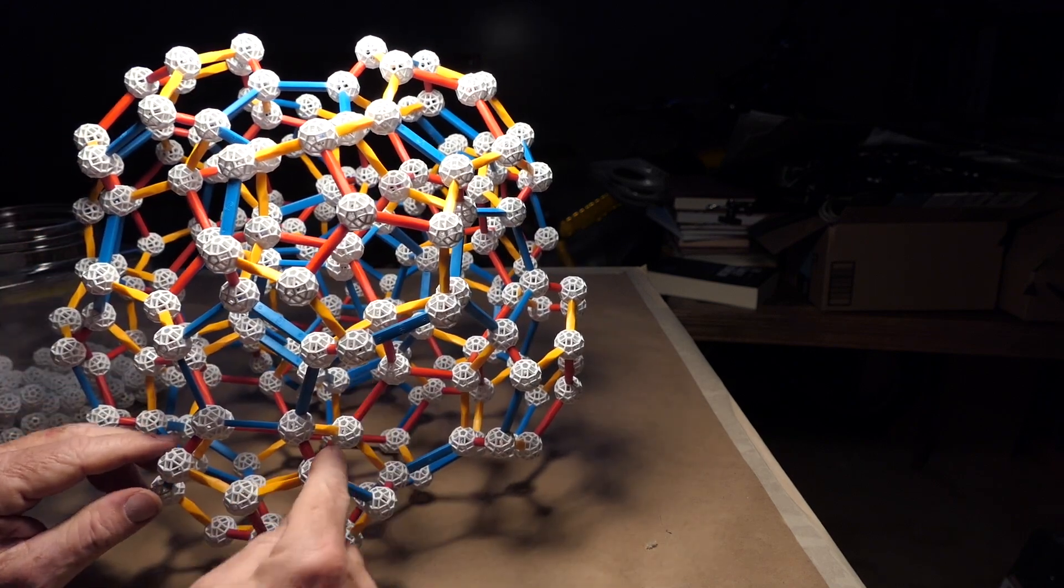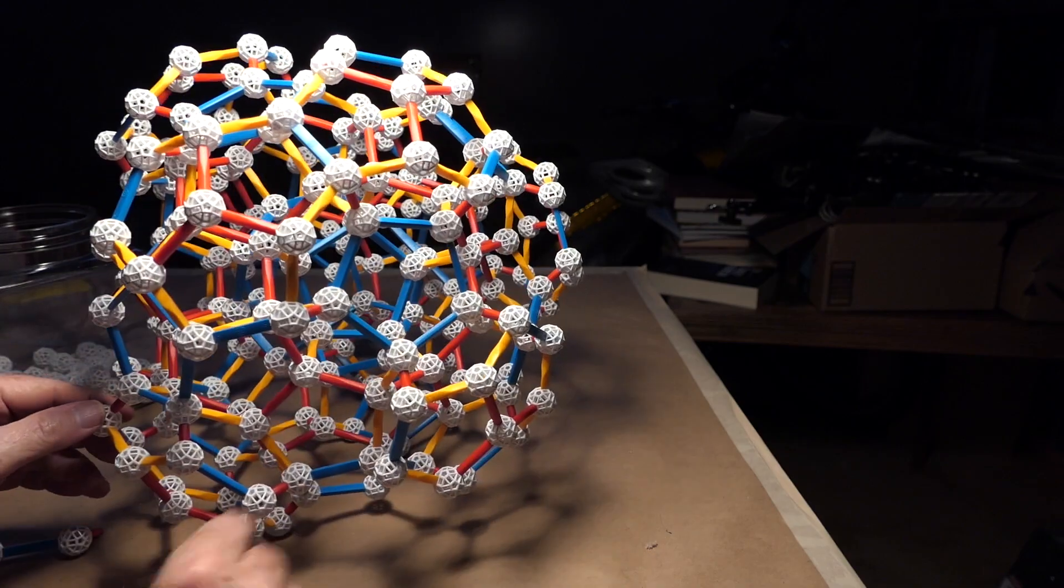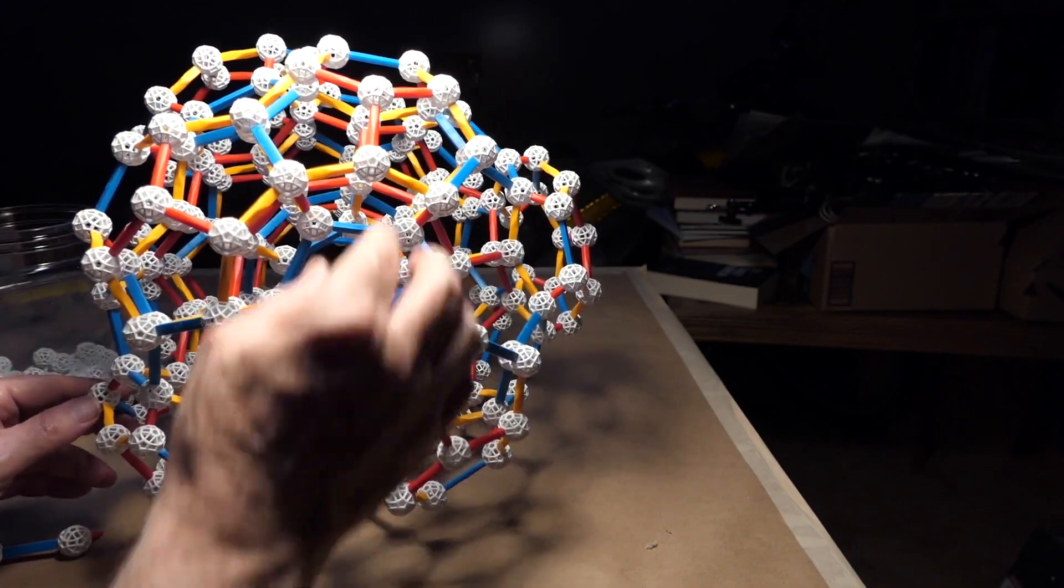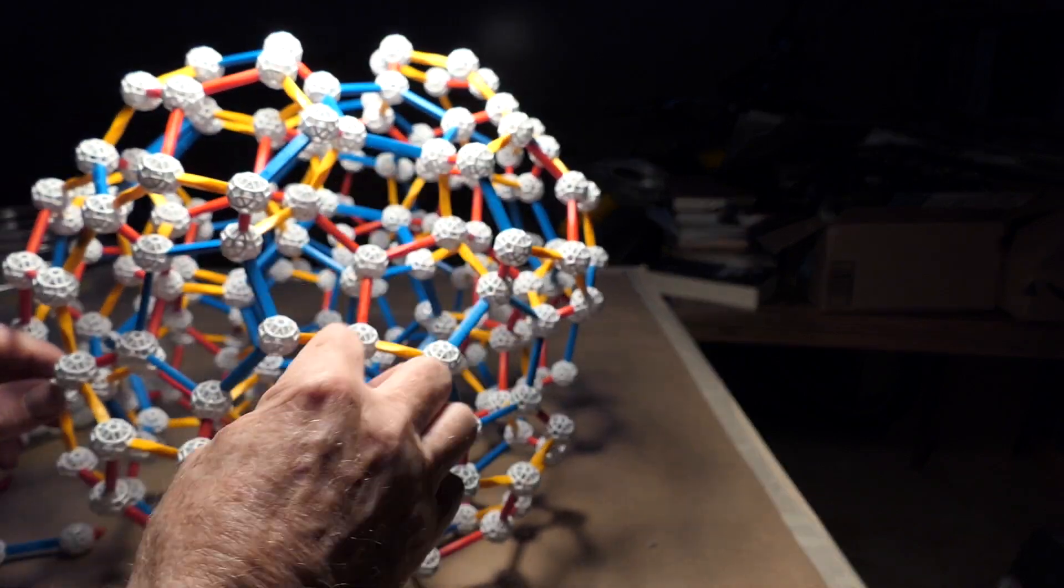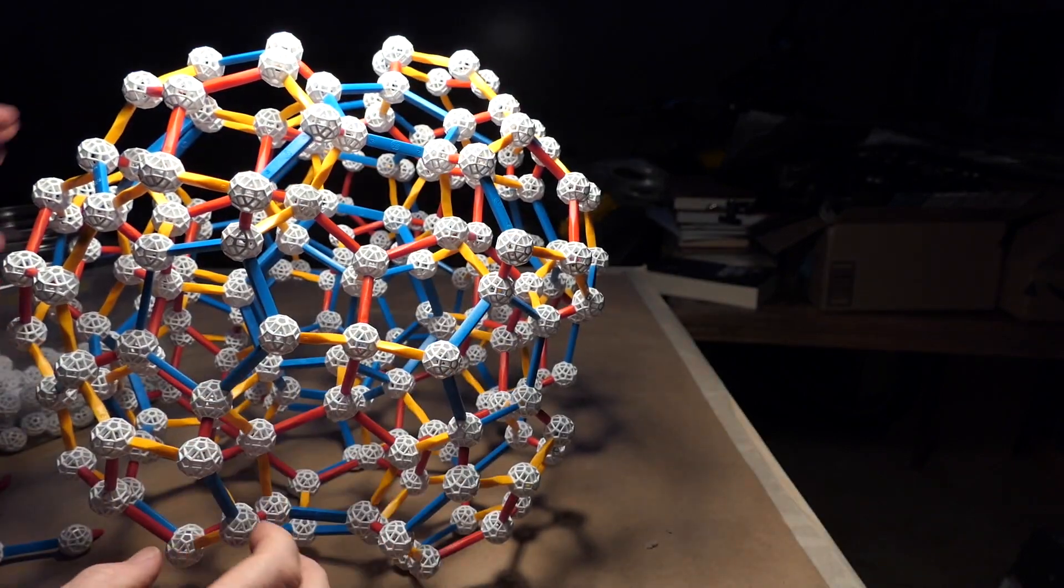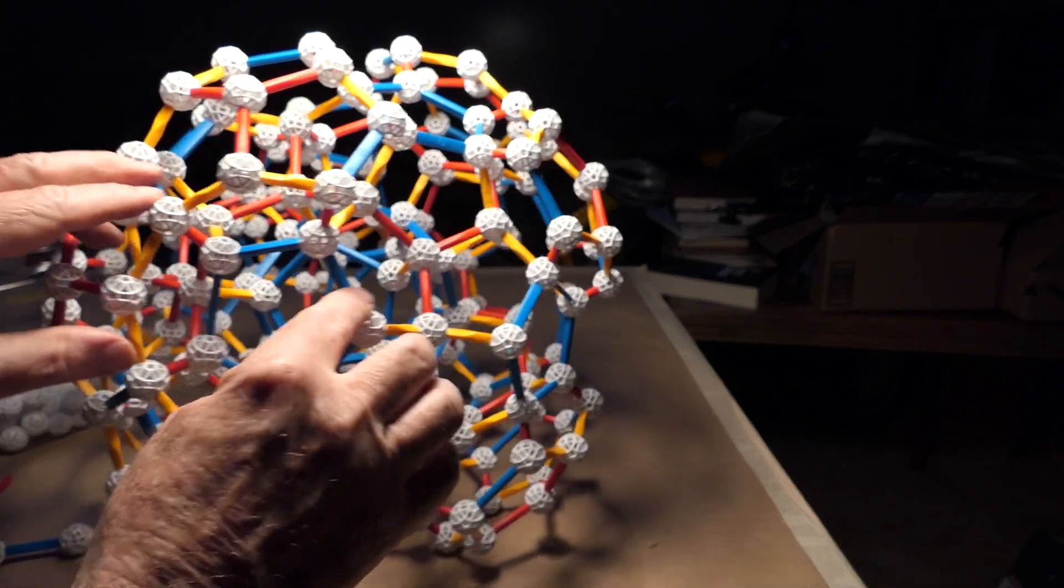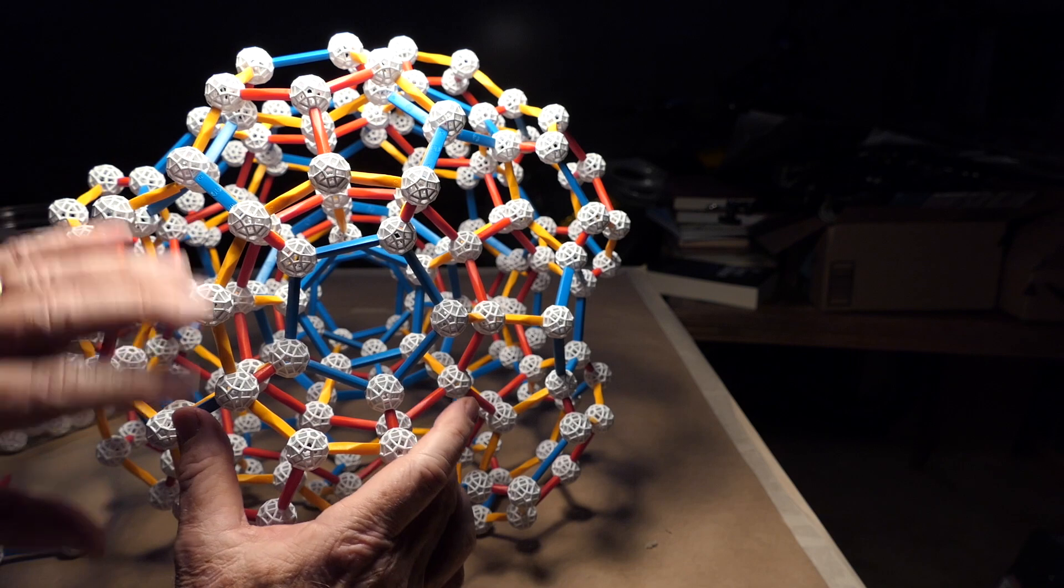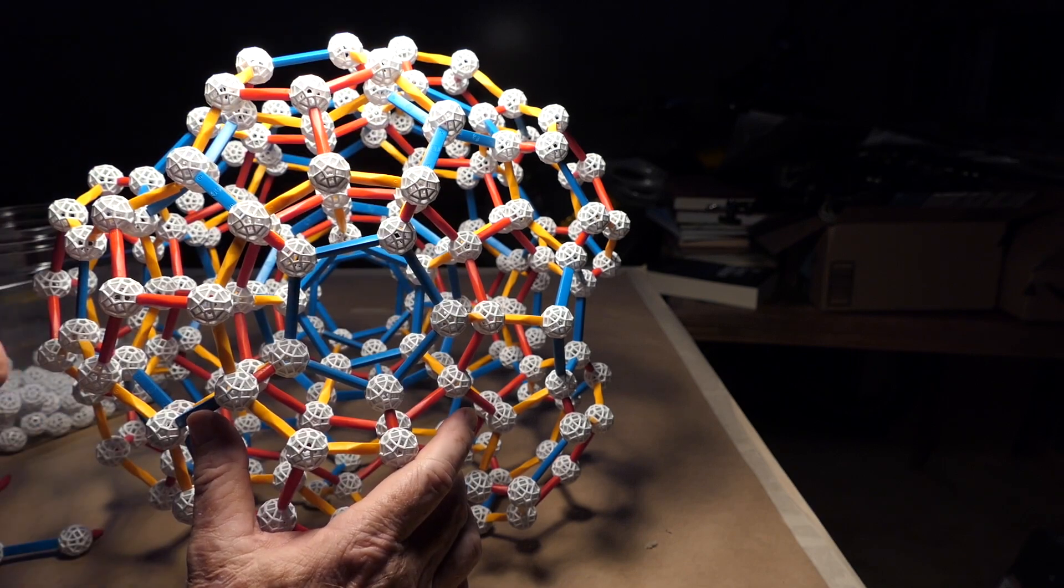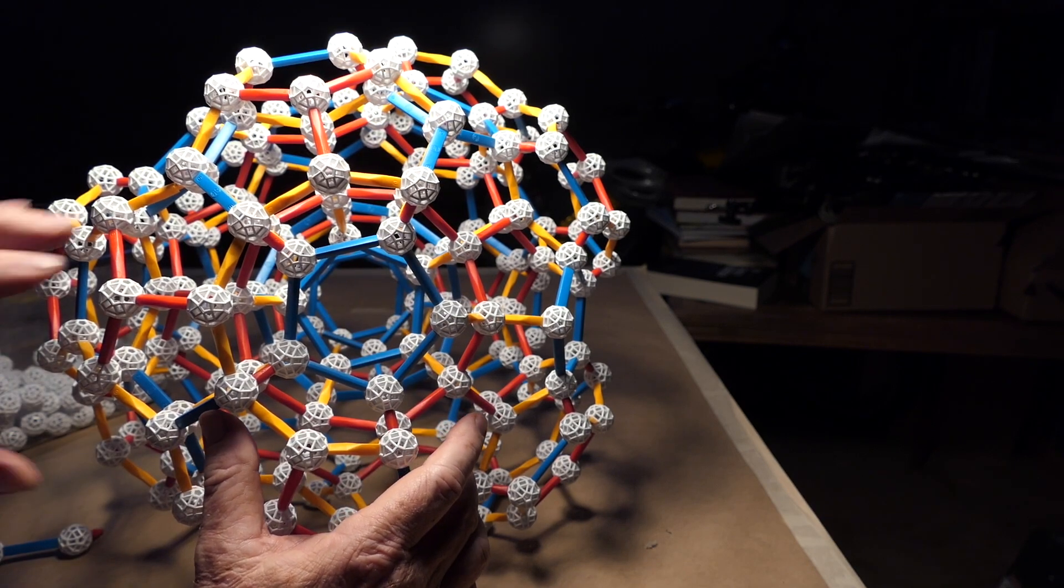So we need to do one here, two there. This one needs one, one. So you can kind of see that. And we're just going to be adding these pieces around here until each one of these blue pentagons is surrounded by a yellow ring of flattened dodecahedrons.